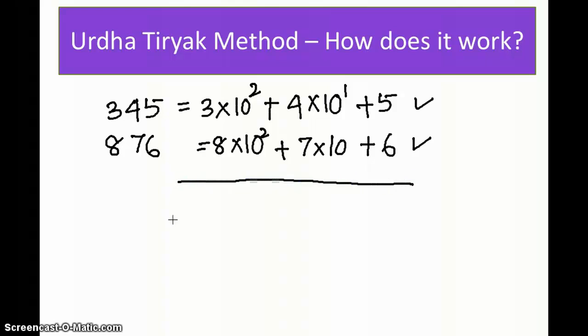We multiply 8 times 3, which gives me 24 times 10 to the power 4, plus (7 times 3 is 21, plus 8 times 4 is 32).